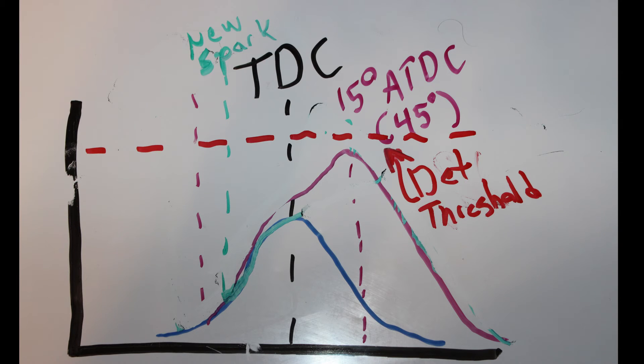Now detonation happens when the peak pressure, no matter where it is, is above the pressure that the fuel can handle, and the fuel actually explodes all at once. With ion sensing I get two things. Number one, I can read peak pressure and figure out which side of 45 degrees it's on, and then advance or retard timing to get it there.